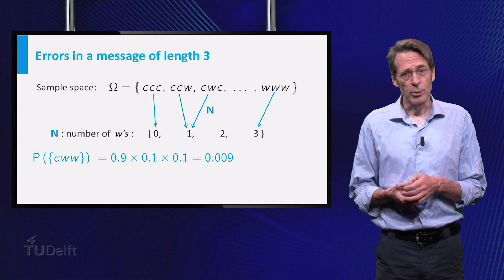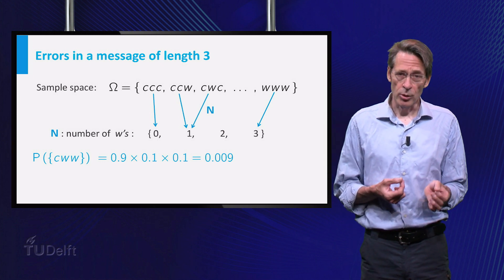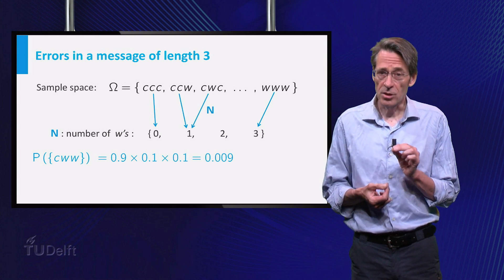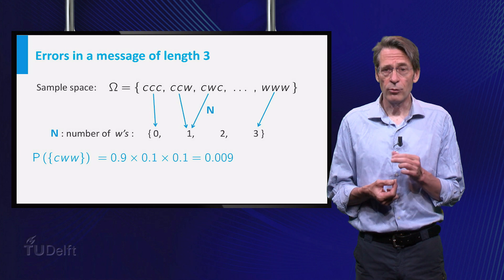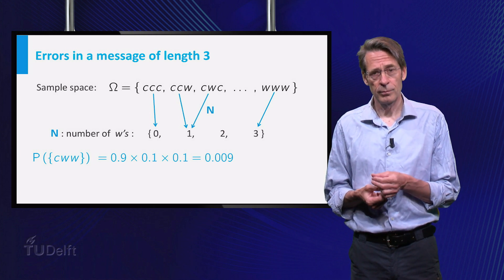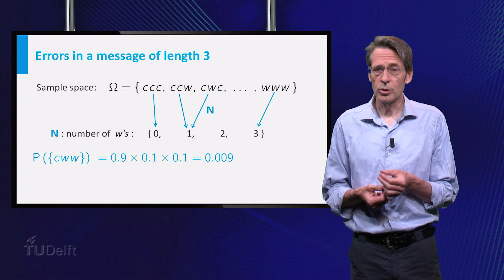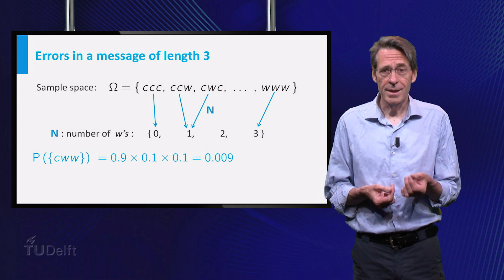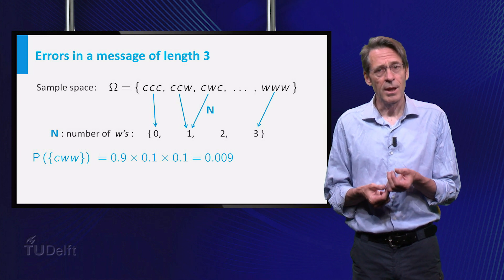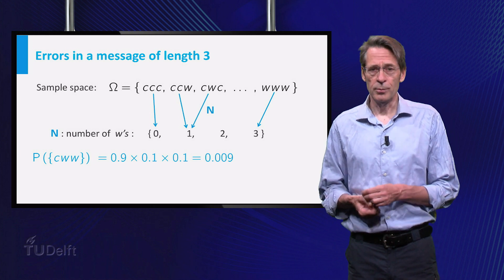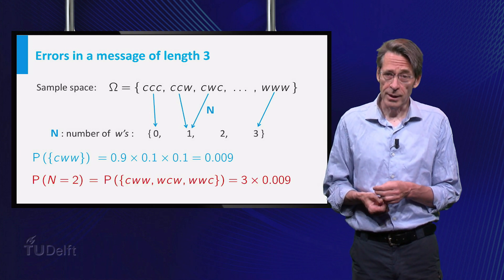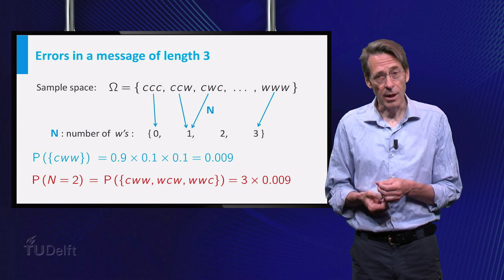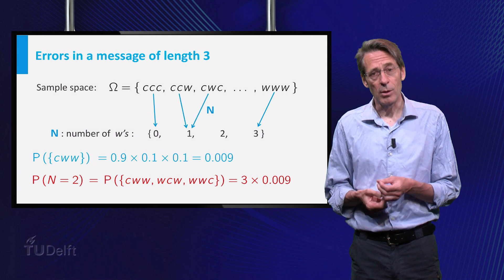The outcome CWW has probability 0.9 times 0.1 times 0.1, and this is one of the three outcomes for which N becomes 2. The other two outcomes are WCW and WWC, and they have the same probability as the outcome CWW. So the probability that N gets the value 2 is equal to 3 times 0.009.